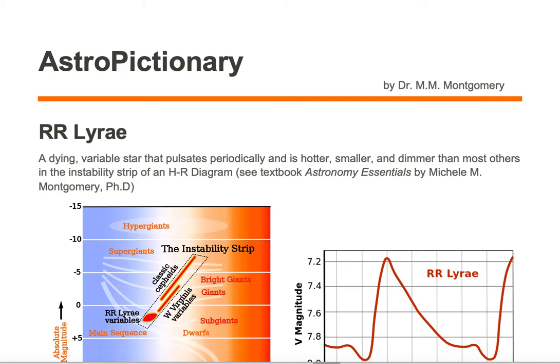An RR Lyra is a dying variable star that pulsates periodically and is hotter, smaller, and dimmer than most others in the instability strip of an HR diagram.